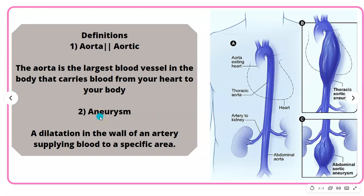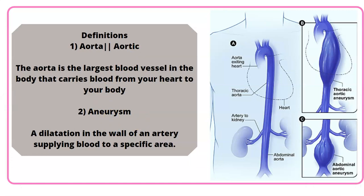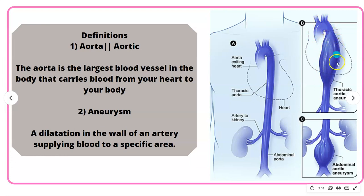What is an aneurysm? When we talk about ruptured aortic aneurysm, we have two components: the aorta — and the adjective is aortic — and the aneurysm. An aneurysm is simply the dilation in the wall of an artery supplying blood to a specific area. As you see here, this aorta dilates and turns into a balloon-like enlargement of the aorta.